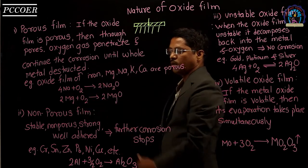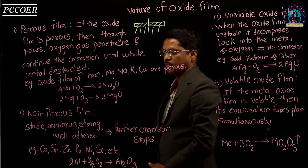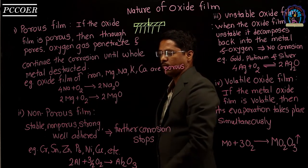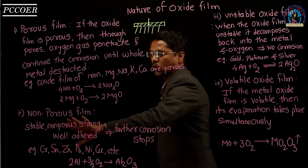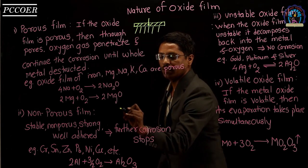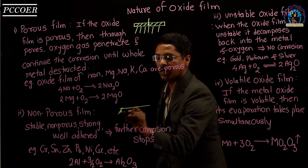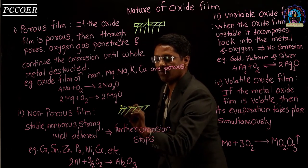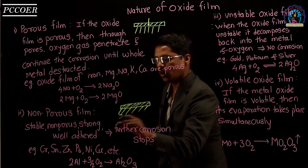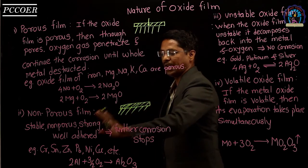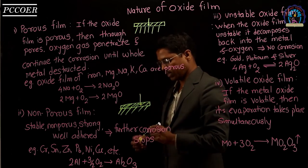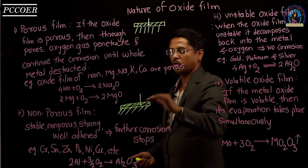The second type of oxide film is the non-porous oxide film. A non-porous oxide film is generally stable, non-porous, strong, and well adhered to the metal surface. If the oxide film formed is strong, non-porous, and well adhered, further corrosion cannot take place, and the metal gets protected.